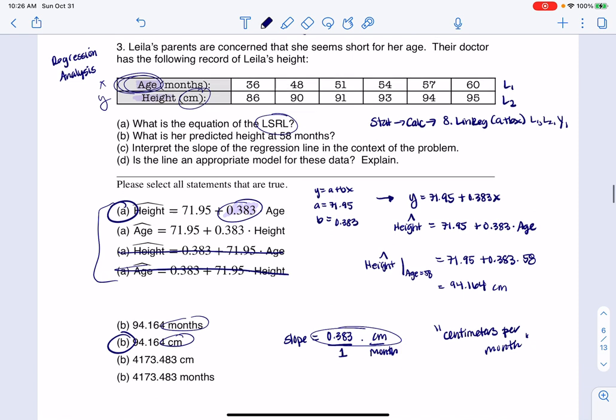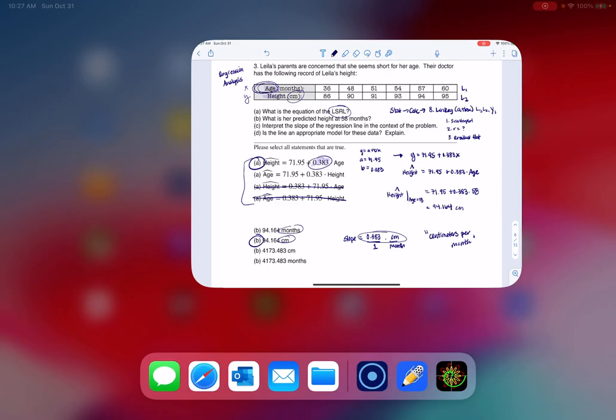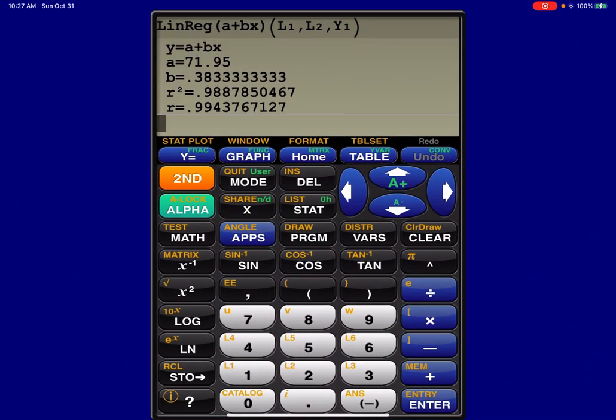Alright. The last thing we have to do is figure out if a line is appropriate. Now there are three factors that go into this. You need to look at your original scatter plot. You need to look at your correlation coefficient. And then the most important thing is you need to look at your residual plot. So we're going to do all of that. And I'm going to do it on my calculator. And we're going to take a look at it. But let me actually just go through and get the R value.